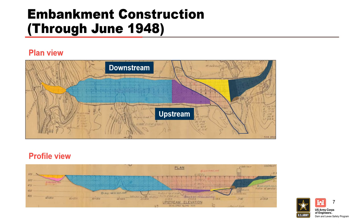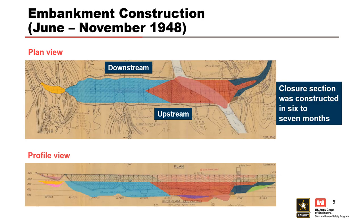Worcester Dam was authorized in 1938, but the notice to proceed for construction was not received until 1946. Most of the embankment and outlet works were constructed over about two years. In June 1948, the Pateau River was diverted through the outlet works, and over the next six to seven months, the channel was filled and the closure section of the embankment was constructed. The portion shaded in blue was allowed to sit for 14 months prior to reservoir impoundment, while the closure section shaded in red was completed approximately one and a half to two months prior to impoundment.